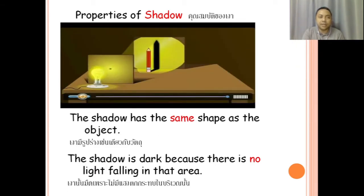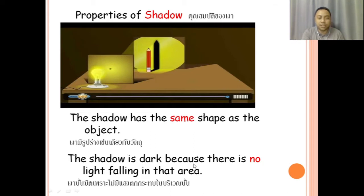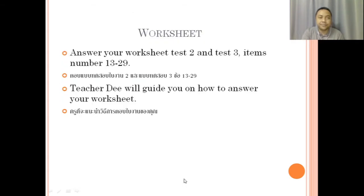Properties of shadow: the shadow has the same shape as the object. As you can see in the picture, the opaque object is the pencil, so the shadow also has the same shape as the opaque object. The shadow is dark because there is no light falling in that area.